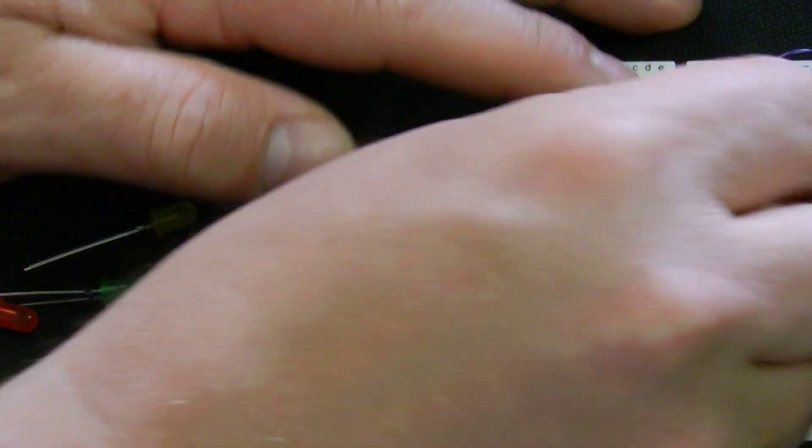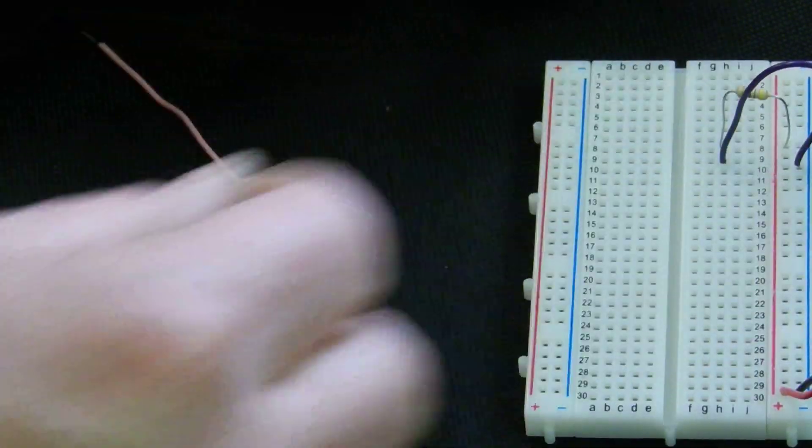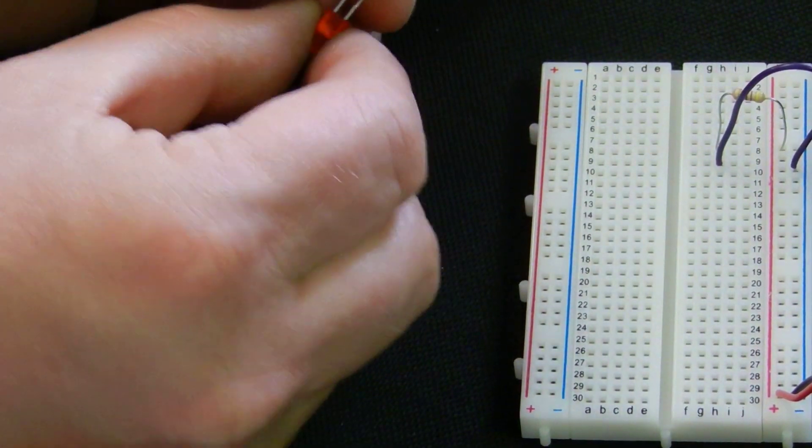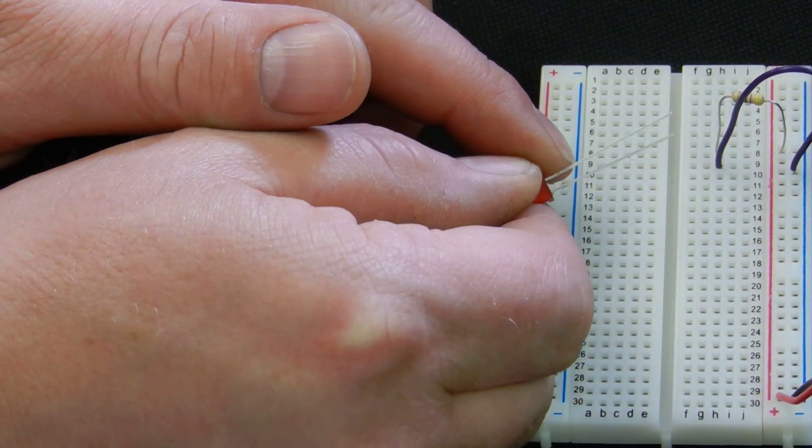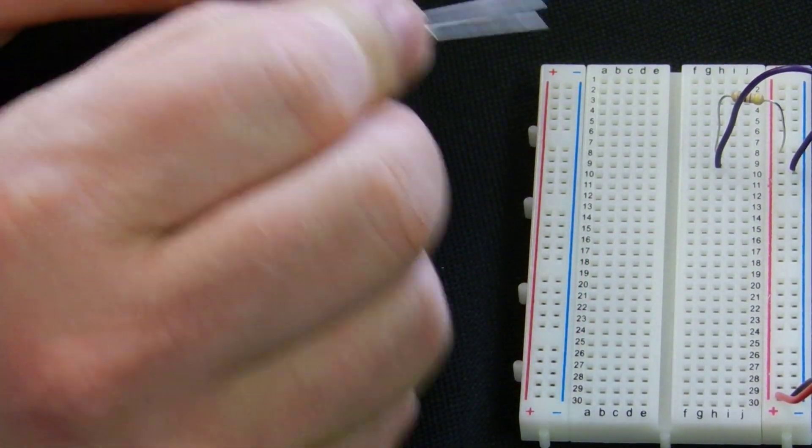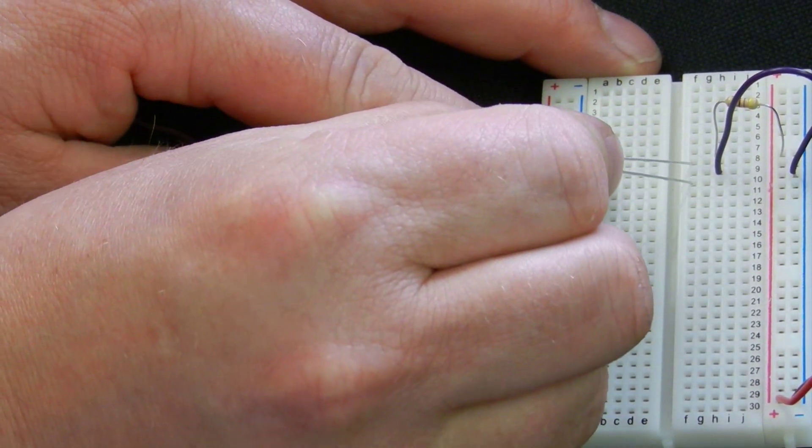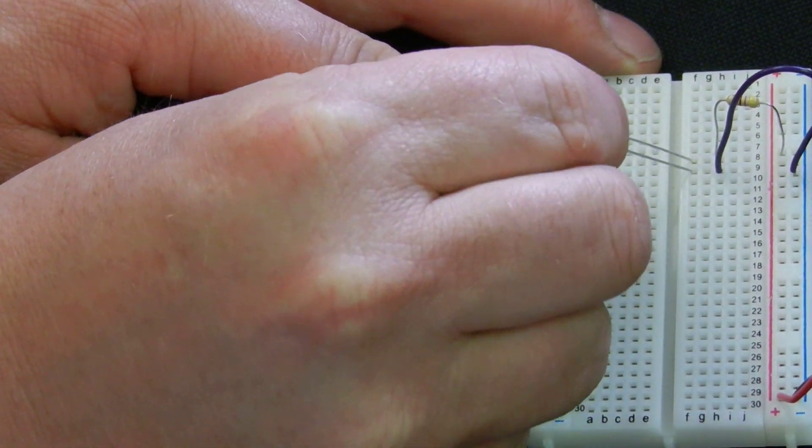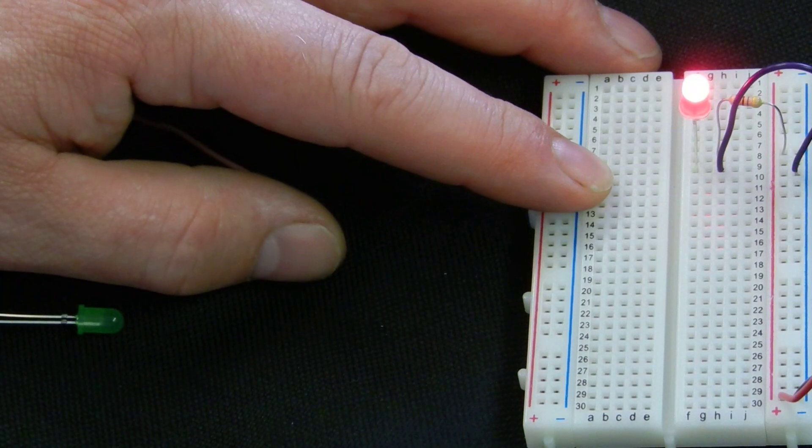Going back to where we were, we will just pop out. If we take the LED there are two different lengths of leg on an LED. The long one is the one we want to connect to the positive. So towards the hole, drop it straight in.